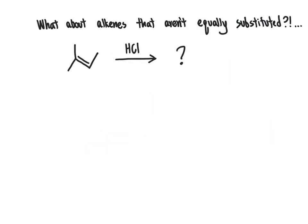In this example, I've drawn a starting alkene that does not have equally substituted alkene carbons. The alkene carbon on the left has two alkyl groups bonded to it; the alkene carbon on the right has only one alkyl group and a hydrogen. In this case, we would end up with two different constitutional isomers depending on where we chose to put the H and the Cl. So we need to know which of these products is going to be preferred. To answer that question, we look at the mechanism for this reaction, paying special attention to predicting what intermediates would be favorable at each step.